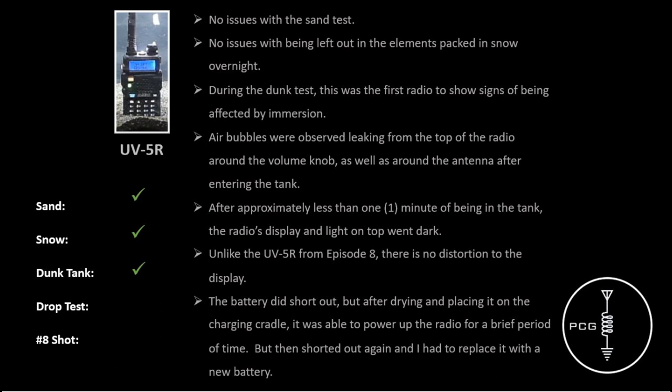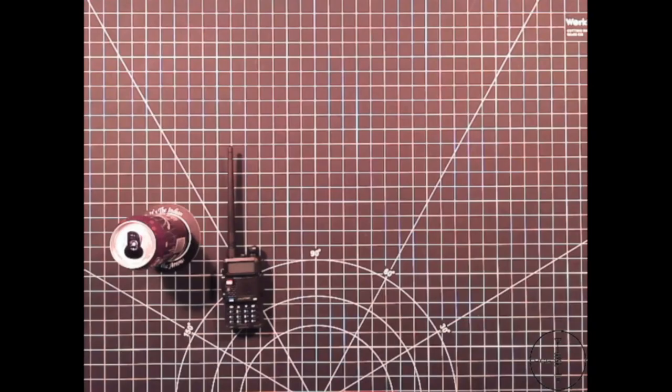However, unlike the UV-5R from Episode 8, I'm not noticing any distortion to the display or condensation. The radio appears to have dried out fairly well. However, the original battery did short out. After drying out, I placed it on a charging cradle. It was able to power up the radio for a brief period of time, but ultimately it died, so I replaced it with a new battery.